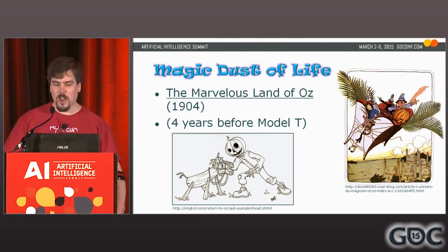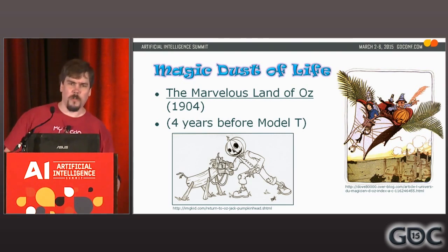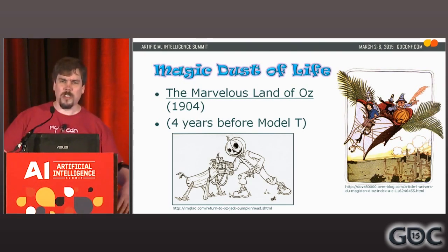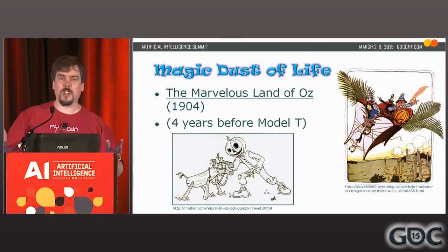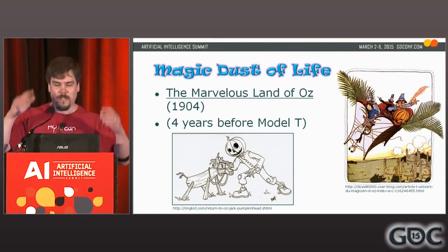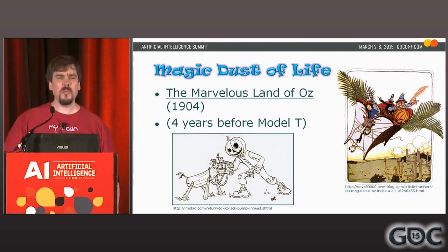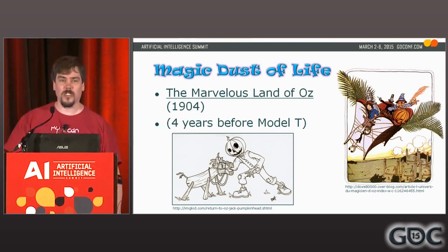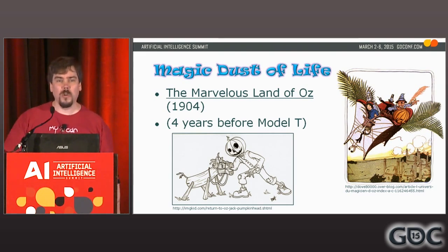They make a character named Gump out of two sofas and some palm fronds, and use him to fly away from the bad guy — but they forget to give him any way to turn, so he can only go in straight lines. They have to aim him and fly off in that direction. That seems like a really good analogy for the struggles we have when we bring characters to life, trying to avoid those awkward moments when they don't move right or don't feel alive.